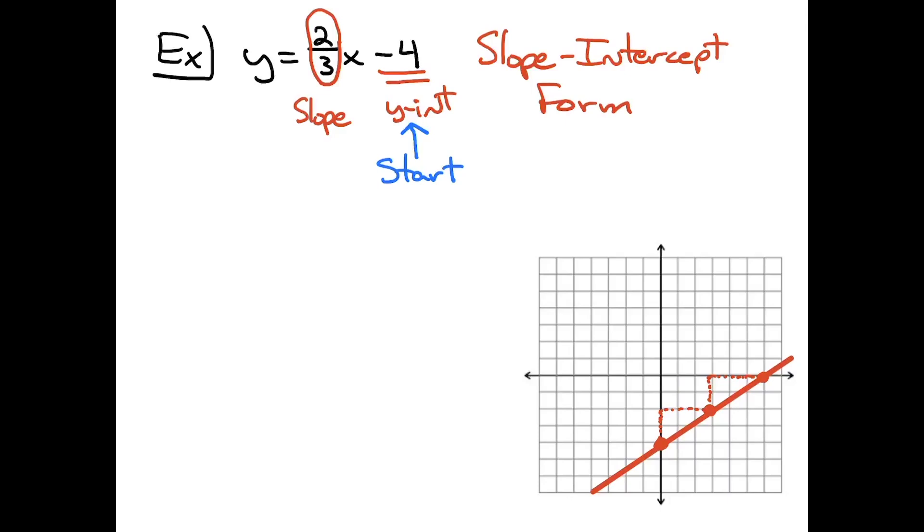So three quick examples there: one of each form of slope-intercept form, point-slope form, and standard form, and how you would go about graphing all three of those. Definitely thanks for watching. If the videos are helping, please share with your friends so they can benefit too. And don't forget to subscribe to the channel. Thanks.